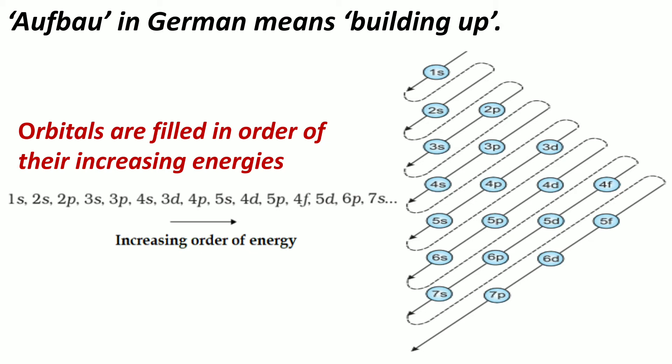In other words, electrons first occupy the lowest energy orbital available to them and enter into higher energy orbitals only after the lower energy orbitals are filled.